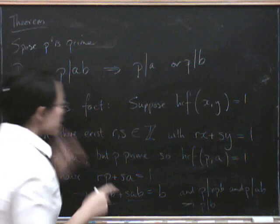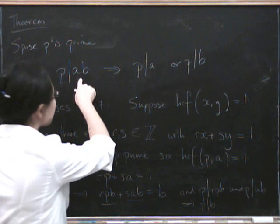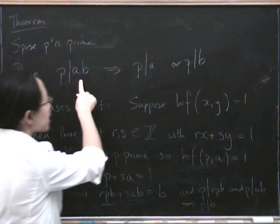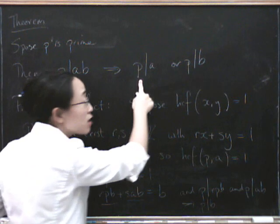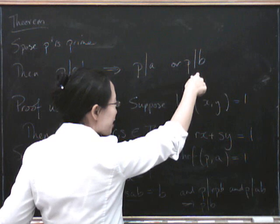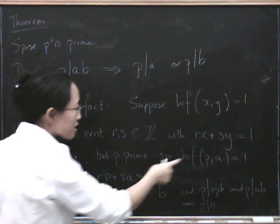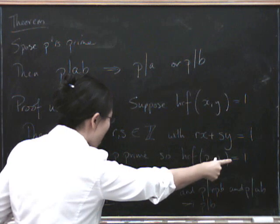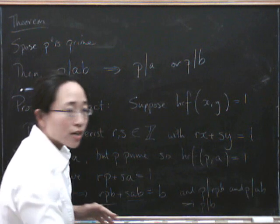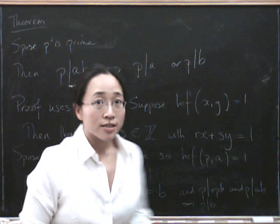So let's just go through what we did again. We said suppose that P divides AB, but suppose it doesn't divide A. So what we have to conclude is that P does divide B. So what we say is that well, if it doesn't divide A, the highest common factor of P and A has to be 1. So we go through this trick and we conclude that P does divide B.